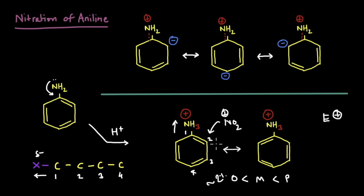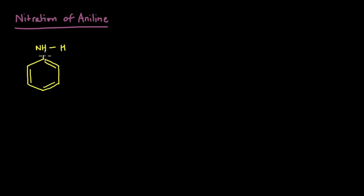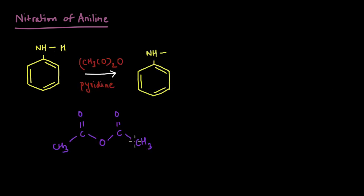But what if we don't want the meta product? The anilineum ion formed because H+ reacted with the lone pair. What if we can block this lone pair and engage it elsewhere so it does not form that ion, thereby preventing the meta product? What we want to do is block the NH2 so it does not destabilize the ring, and then let nitration happen. We react the NH2 with acetic anhydride, which breaks and attaches a C=O and CH3 group to the nitrogen.